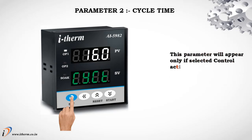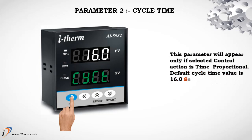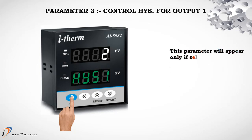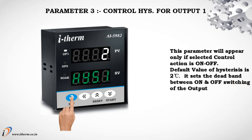Parameter 1: Proportional Band. This parameter will appear only if the selected control action is time proportional. Default value for proportional band is 5.0. Parameter 2: Cycle Time. This parameter will appear only if the selected control action is time proportional. Default cycle time value is 16.0 seconds for relay output and 1.0 seconds for SSR output. Parameter 3: Control Hysteresis for Output 1. This parameter will appear only if the selected control action is on/off. Default value of hysteresis is 2 degrees centigrade.